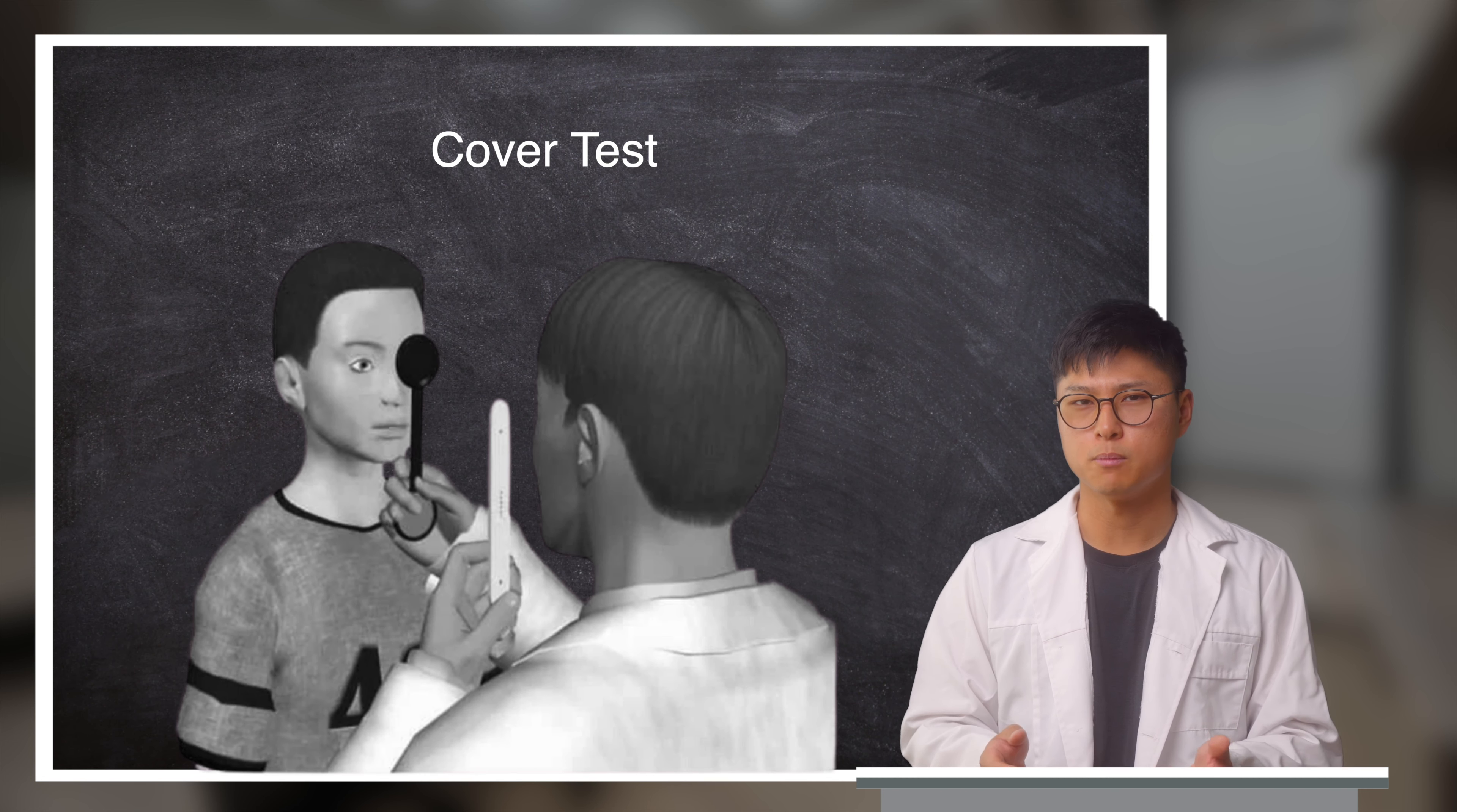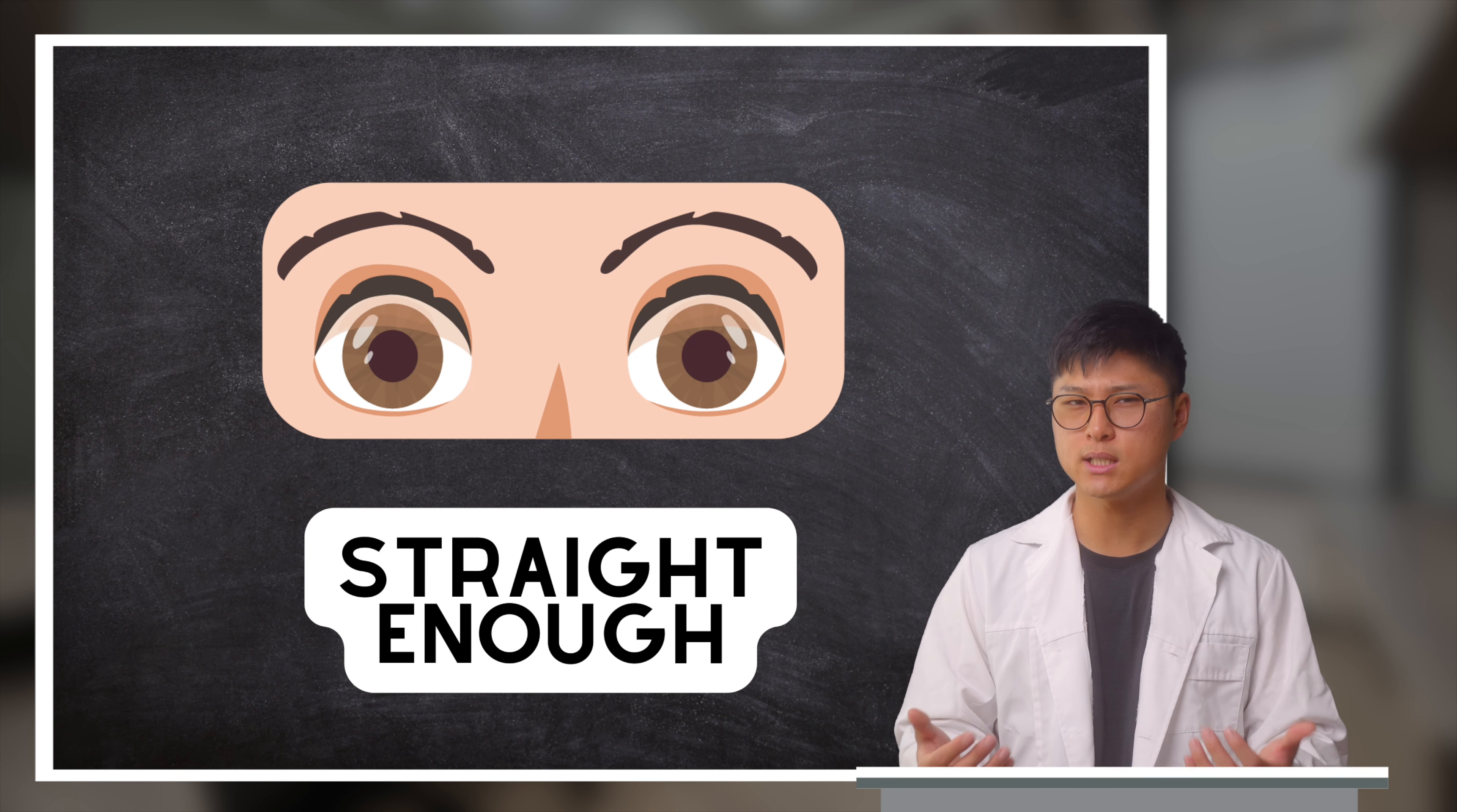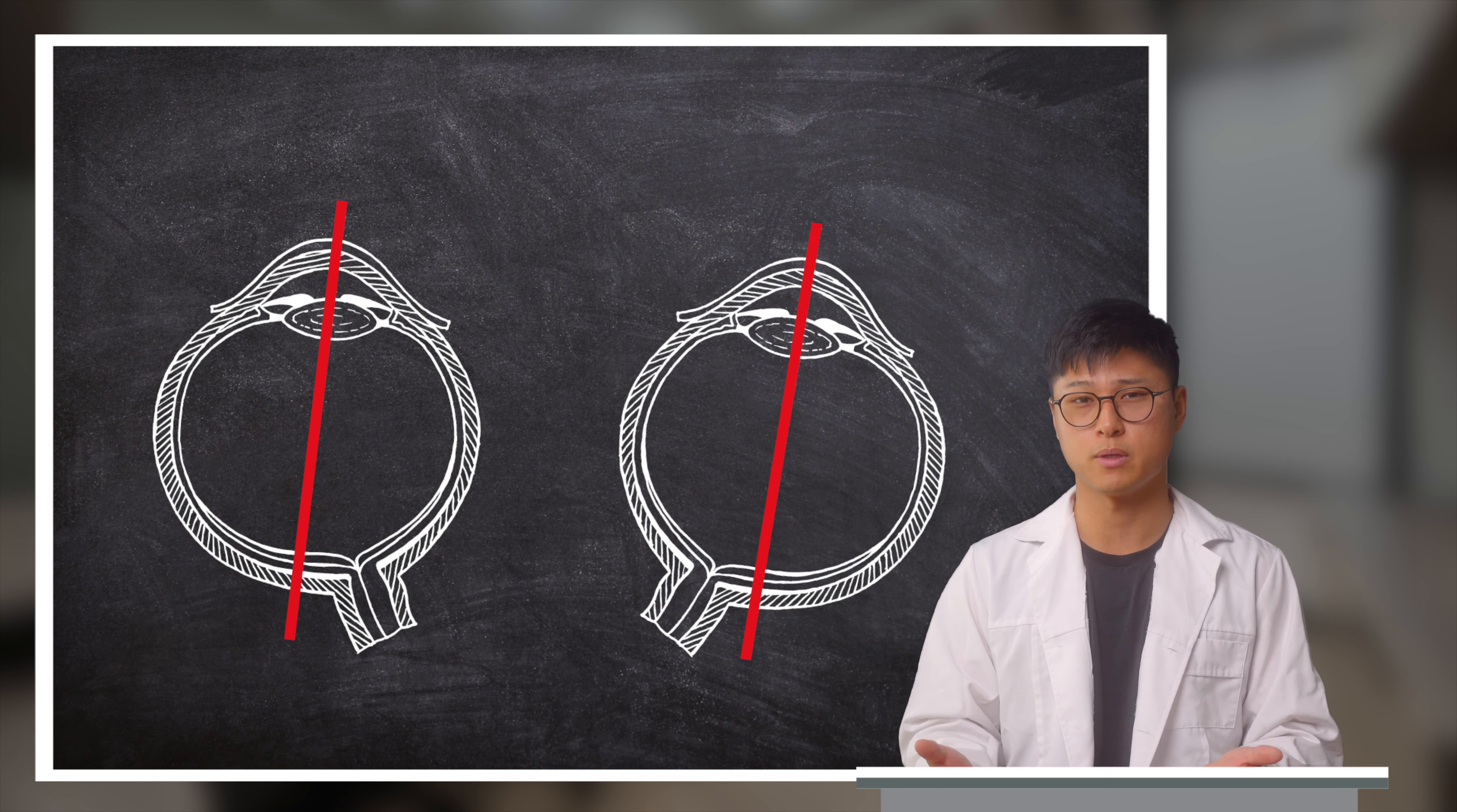Phorias are measured by the optometrist via a cover test or a Howell phoria card to measure the extent of misalignment. But in most cases, eyes are straight enough to not cause any problems. That is to say, as a default, the eyes will return to their preferred state of alignment that they're most comfortable with.